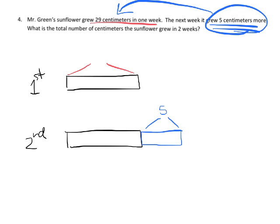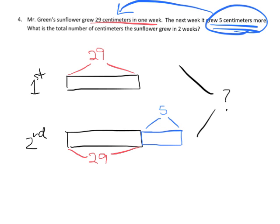So the first week it grew 29 centimeters, and the second week it grew five centimeters more than the first week. We want the total growth over two weeks. I'll draw a tape diagram with a first-week bar and a second-week bar drawn to the same initial length. Since both bars are drawn identically, that shared portion is also 29 centimeters.